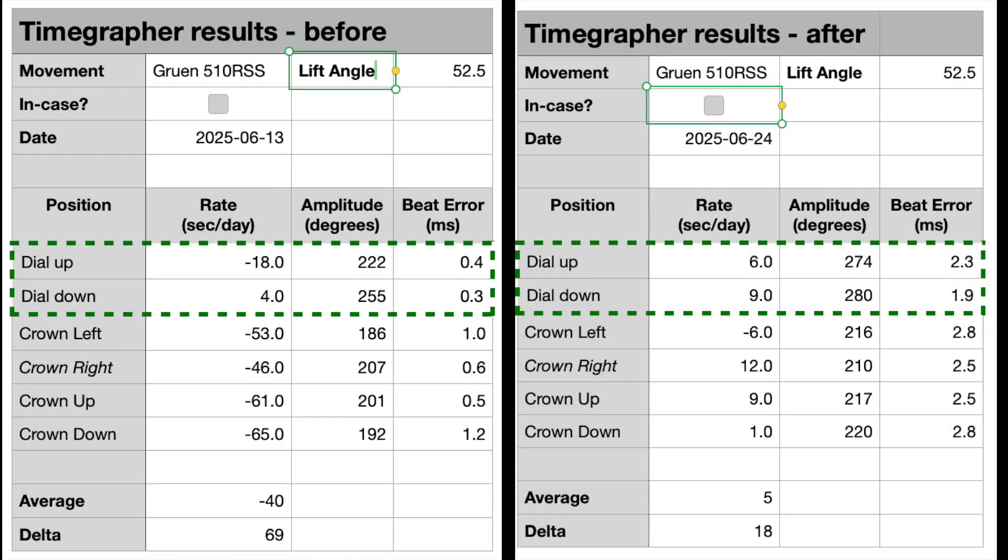On the left, the initial bad results. On the right, the movement's present performance. These numbers were taken 30 minutes after fully winding the watch, and I waited one minute between position readings. The rate and amplitude readings are improved in every position, and the amplitude for dial-up and dial-down now differ by only six degrees.